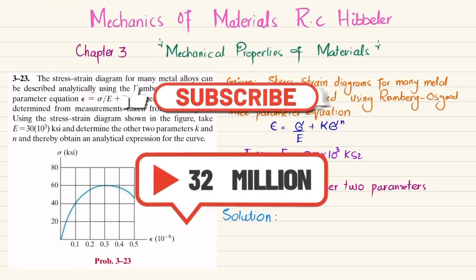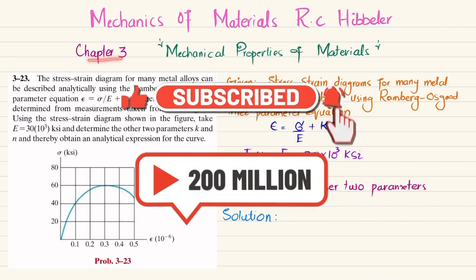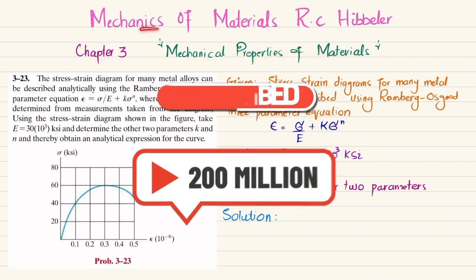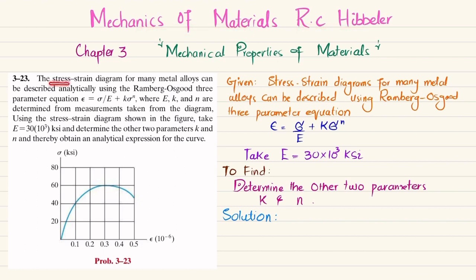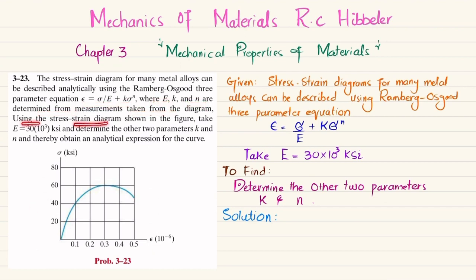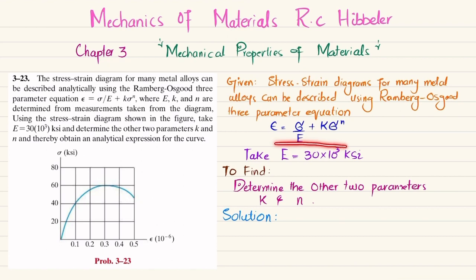Welcome back. In this video, we are going to solve problem 3-23 taken from chapter 3, Mechanical Properties of Materials, from Mechanics of Materials by R.C. Hibbeler. The statement says the stress-strain diagram for many metal alloys can be described analytically using the Ramberg-Osgood three-parameter equation, where E, K, and N are determined from measurements taken from the diagram. We are given E = 30×10³ KSI and need to determine K and N to obtain an analytical expression for the curve.